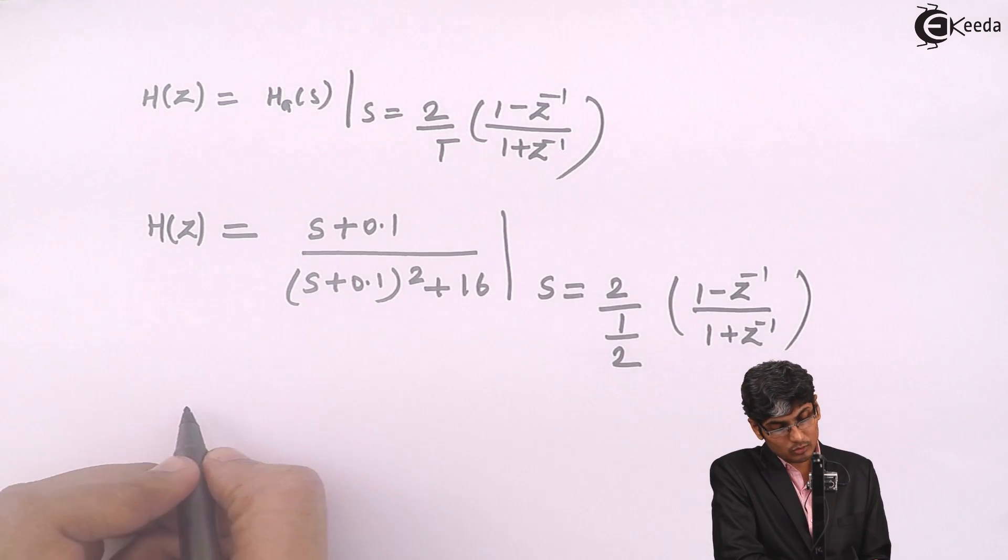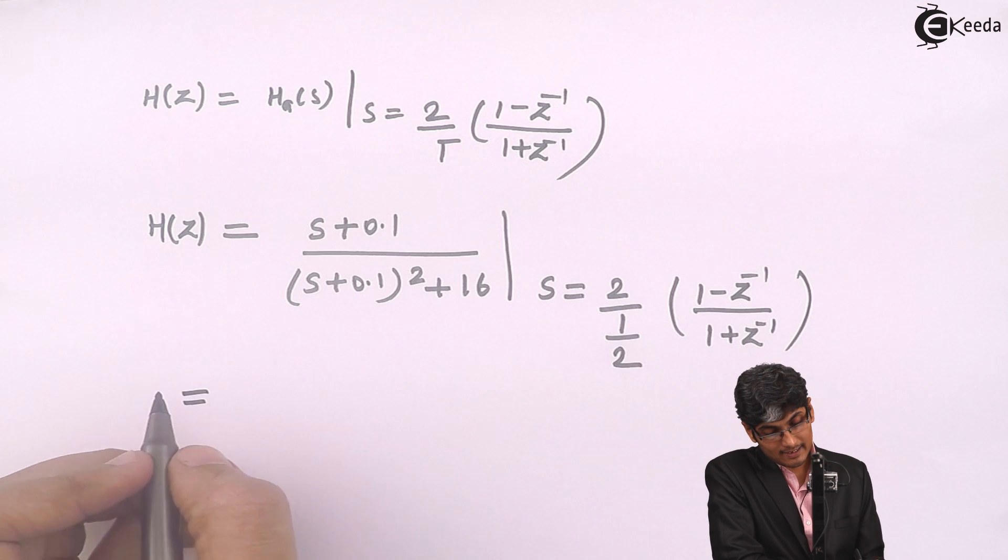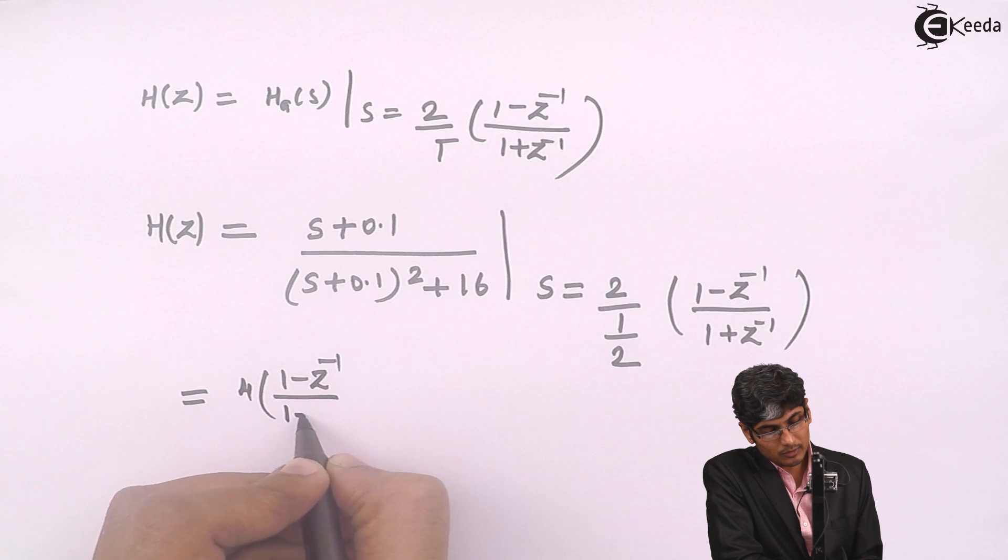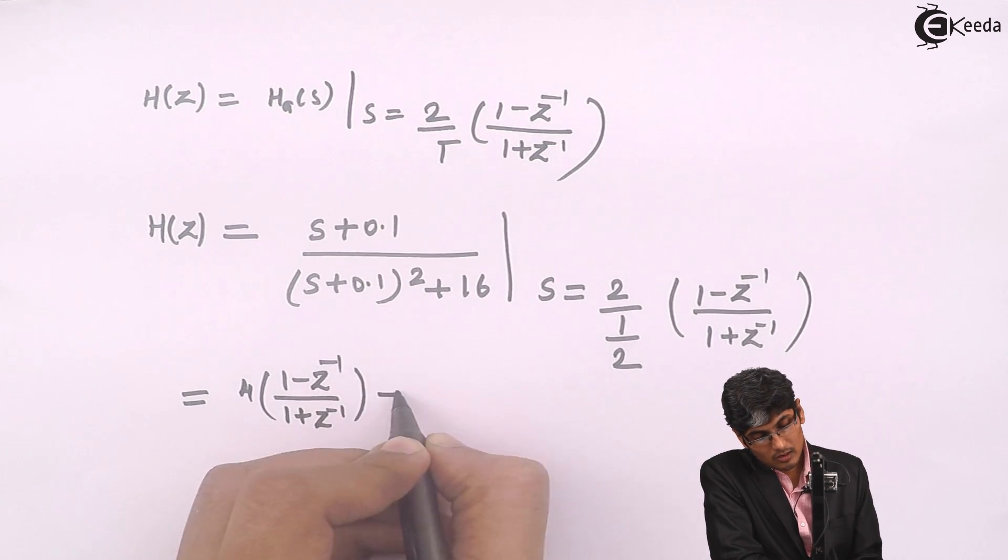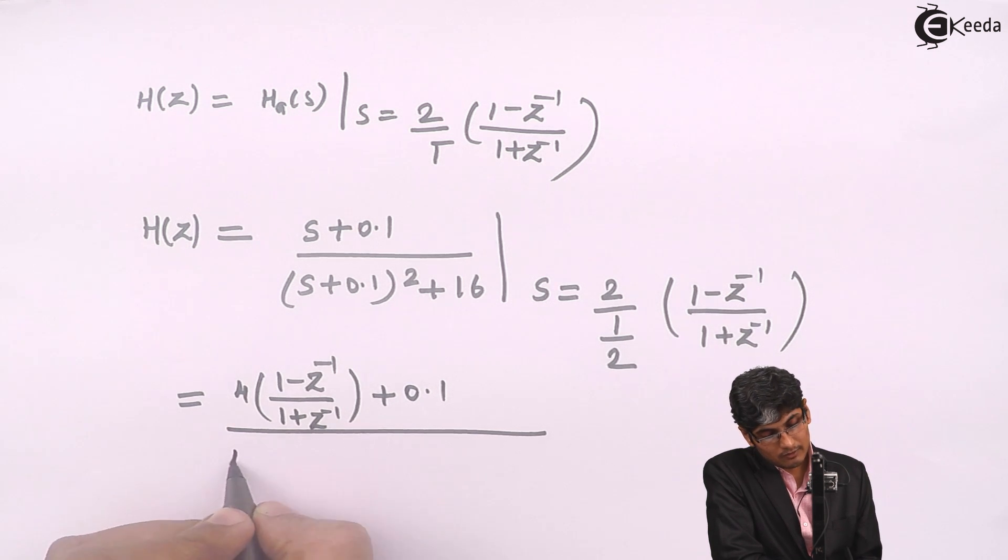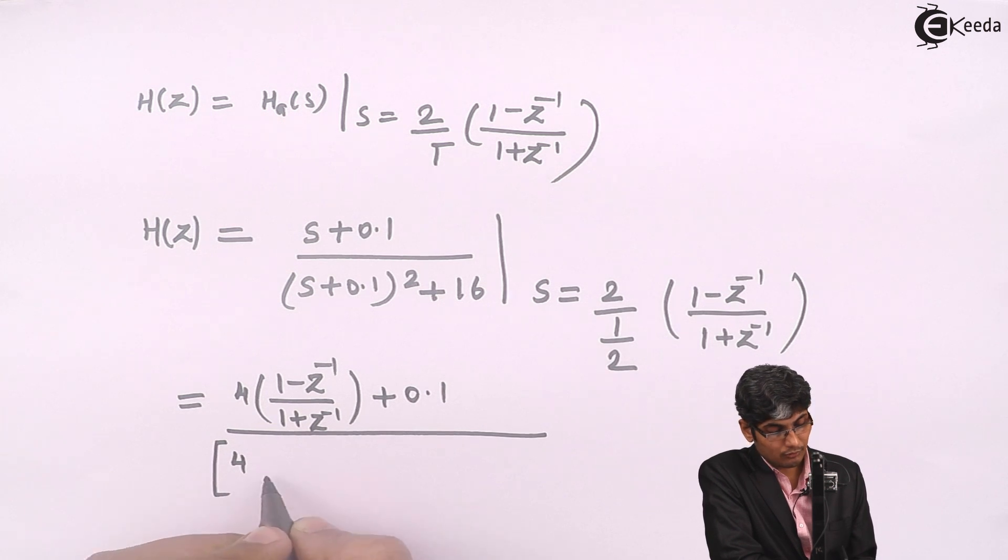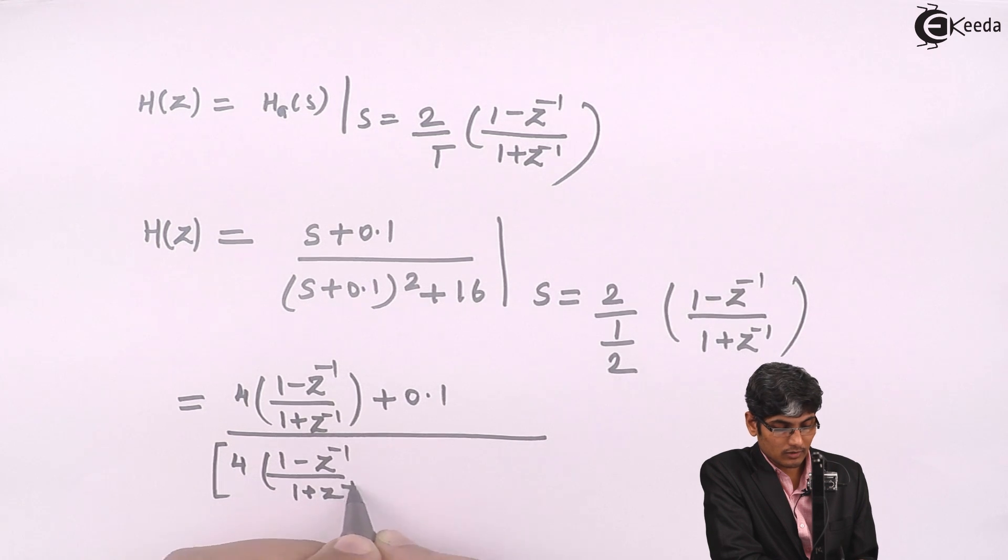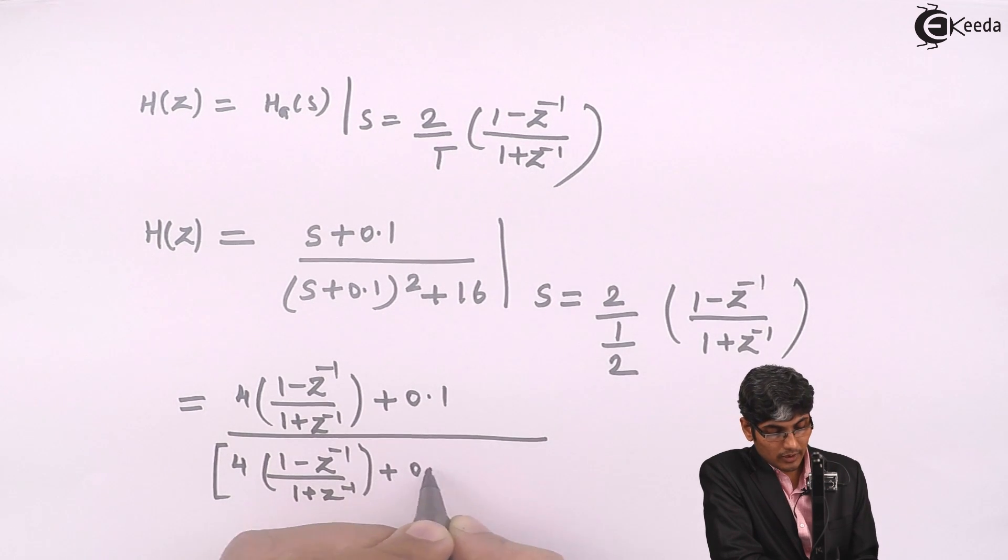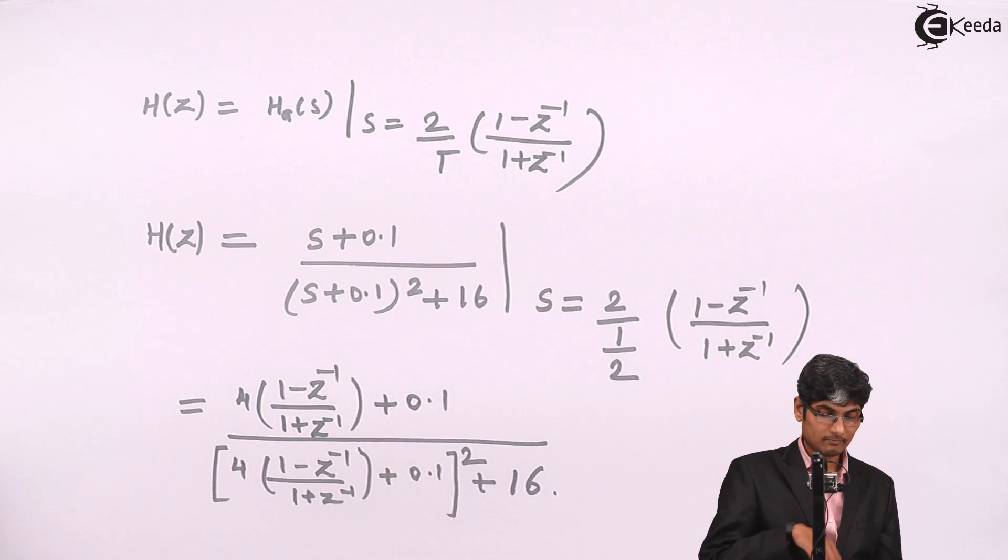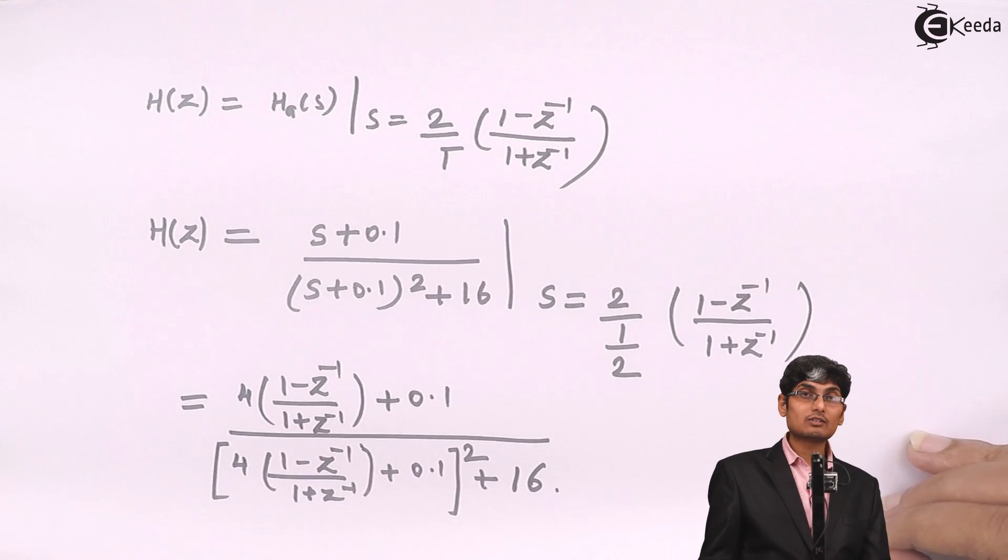Now let us do that. So replace all S's with 4 into 1 minus Z inverse upon 1 plus Z inverse plus 0.1 divided by here I will also have 4 in the capital bracket 4 into 1 minus Z inverse upon 1 plus Z inverse plus 0.1 and this whole raise to 2 plus 16. Let us solve this.